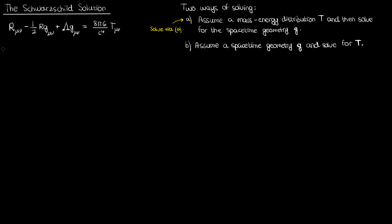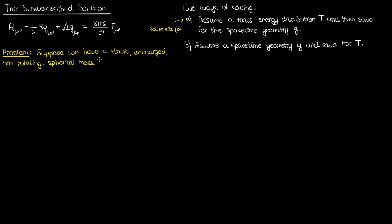Before we begin solving for the Schwarzschild solution, we need to formulate the problem and put forward our assumptions. The problem we're dealing with is as follows: suppose we have a static, uncharged, non-rotating spherical mass M with no other sources of mass or energy around it.